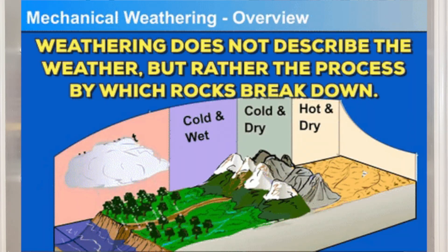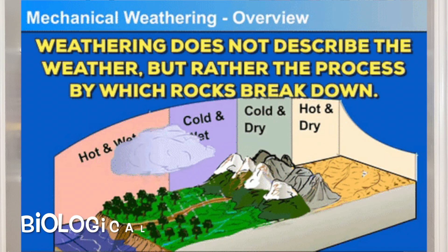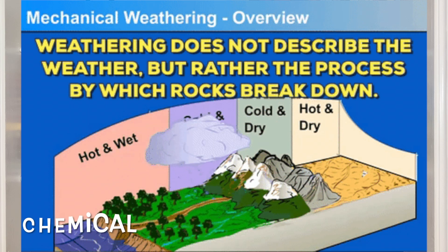But how does weathering happen? There are three ways: biological, physical, and chemical.